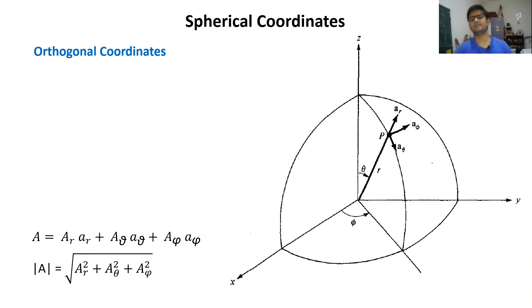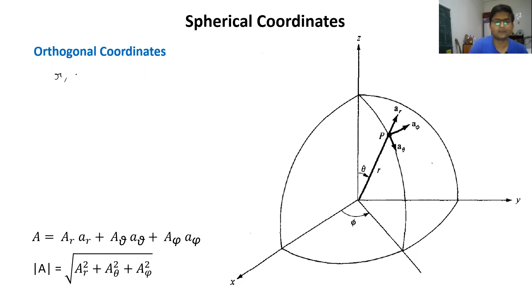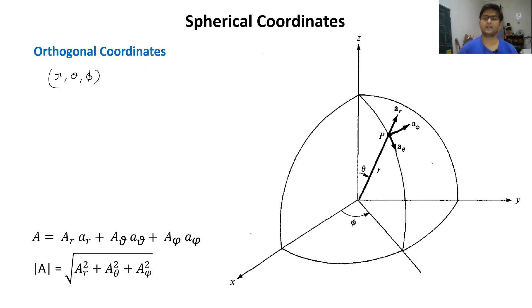In a spherical coordinate system there are three coordinates: the first one is r, the second is theta, and the last is phi. In a spherical coordinate, on the surface of a sphere at any point P, when we connect it to the origin, the coordinate representing this line is called r, and it basically represents the radius of that sphere.